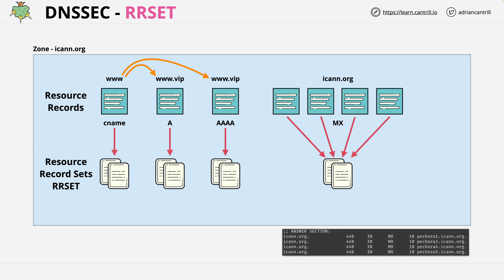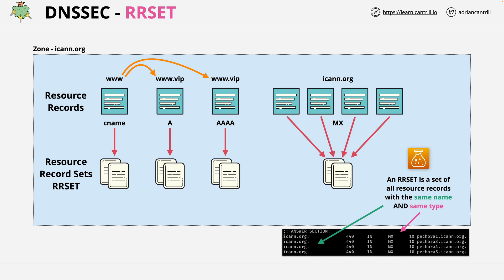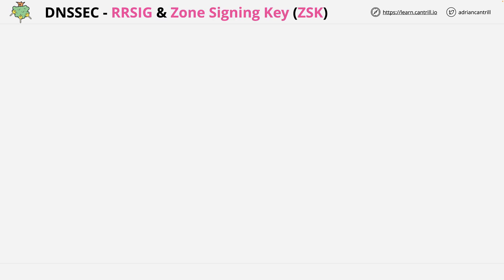This is what an RR set might look like if you actually interact with DNS. Notice how all the names are the same and all the types are the same. So why do you need to know this? Because RR sets are used within DNSSEC. Right now there's no way to tell if any of these resource records are valid. DNSSEC provides this functionality, but it's not individual resource records which are validated — it's resource record sets, or RR sets.